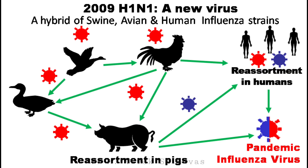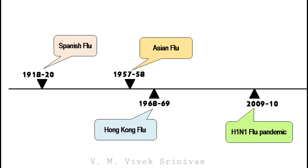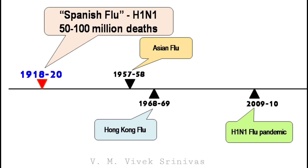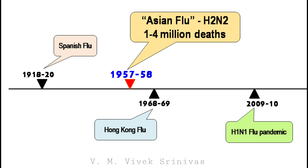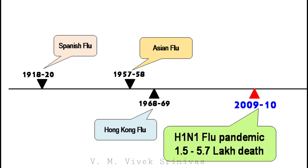2009 H1N1 flu: A pandemic influenza virus, which is a new virus, evolved as a hybrid of swine, avian, and human influenza strains due to genetic reassortment in pigs and humans. Some influenza viruses have created pandemics. In 1918–1920, the Spanish flu caused by H1N1 resulted in 50 to 100 million human deaths. In 1957–1958, the Asian flu caused by H2N2 resulted in 1 to 4 million deaths. In 1968–1969, the Hong Kong flu caused by H3N2 resulted in 1 to 4 million deaths. In 2009–2010, the H1N1 flu pandemic resulted in 1.5 to 5.7 lakh human deaths.